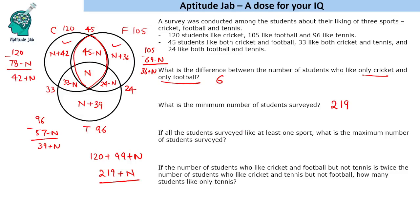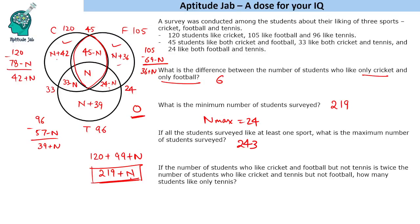The next question states that all students surveyed like at least one sport, meaning no one is outside the Venn diagram. We need to find the maximum number of students surveyed, which is 219 plus n. Since all region values must remain non-negative, n can be at most 24 — because 24 minus n must not go negative. Substituting n equals 24 gives a maximum of 243 students surveyed.